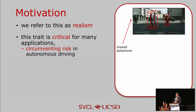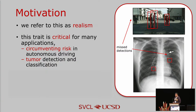We refer to this property of humans as realism. This is very important, and many applications can benefit from it. For example, it can reduce risk in self-driving systems. If a scene is too complicated for the smart car to detect people, we would like it to refuse to perform the task, stop, and require additional information from other sensors.